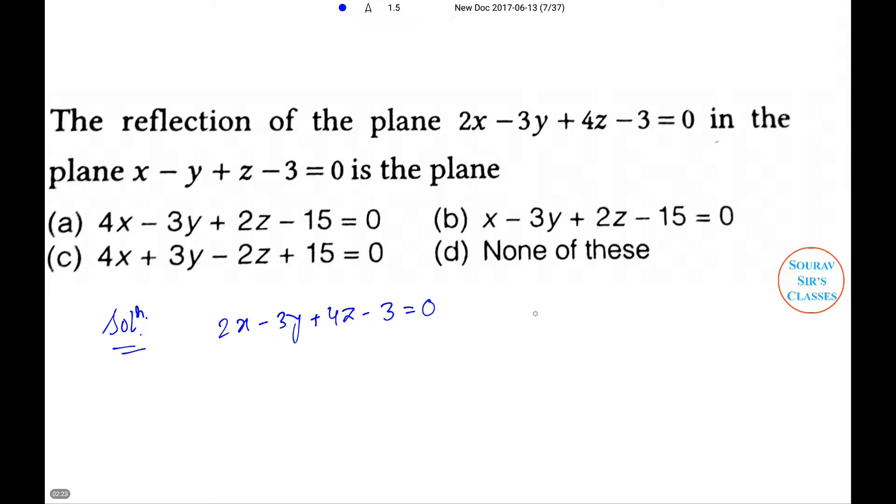So 2 times 2 plus 3 plus 4, multiply x minus y plus z minus 3, that equals 3 into 2x minus 3y plus 4z minus 3.